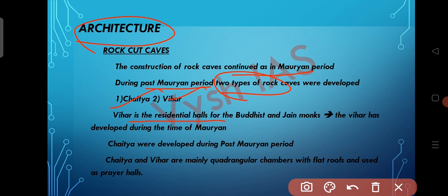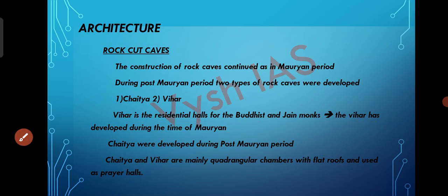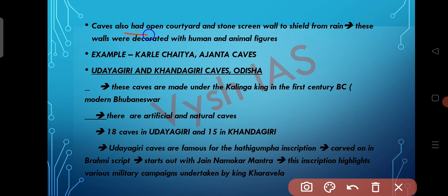The Vihara is a residential hall for Buddhist and Jain monks, which developed during the Mauryan period itself. Chaitya developed during the post-Mauryan period. Both Chaitya and Vihara are mainly quadrangular chambers with flat roofs, used as prayer halls. The caves also had an open courtyard and stone screen walls to shield from rain, and these walls are decorated with human and animal figures. Examples include Karla Chaitya and Ajanta Caves.